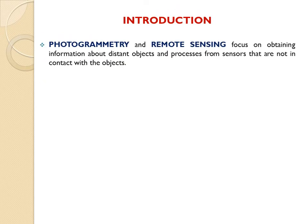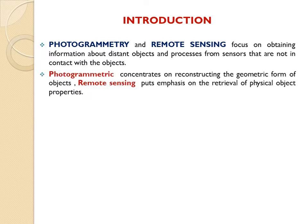Photogrammetry and remote sensing focuses on obtaining information about distant objects and processing them from sensors that are not in contact with the objects. Photogrammetry concentrates on reconstructing the geometric form of objects, while remote sensing puts emphasis on the retrieval of physical object properties.